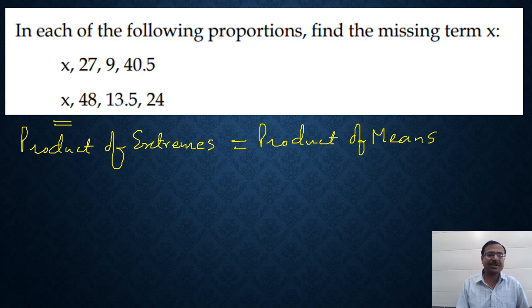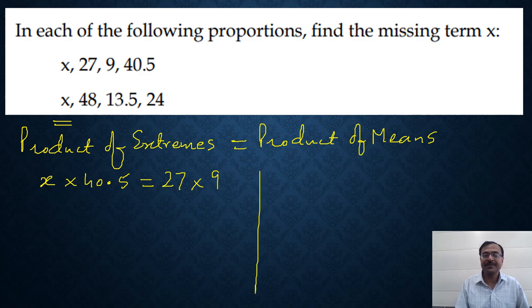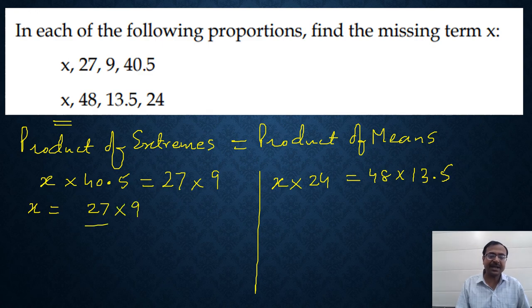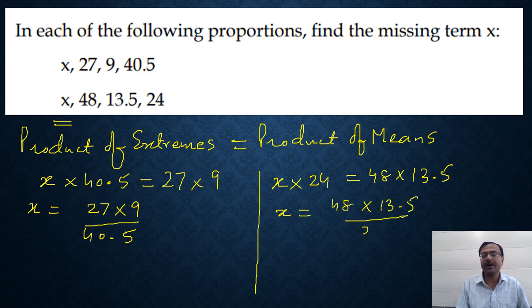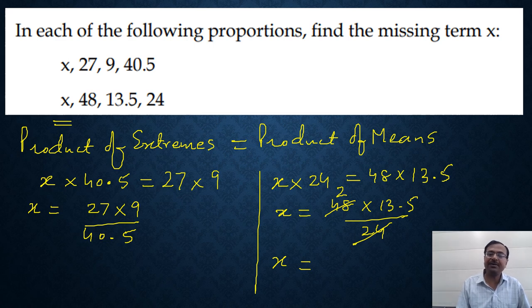So let's take the product of extremes - x times 40.5. And how about the product of means? 27 times 9. And in the other case, x times 24 is equal to 48 times 13.5. So we can find x. You can take this 27 times 9 and 40.5 will move to the denominator. And in this case, 48 times 13.5 upon 24. So 24 comes in the denominator. Can you cancel this 24 with 48 two times? So you have the answer for the second part - 13.5 into 2 is 27. That's the answer for the second part.